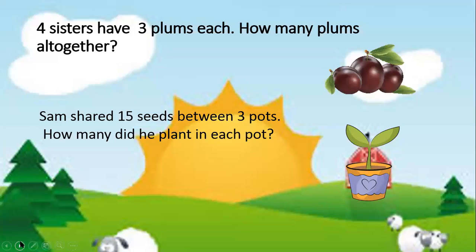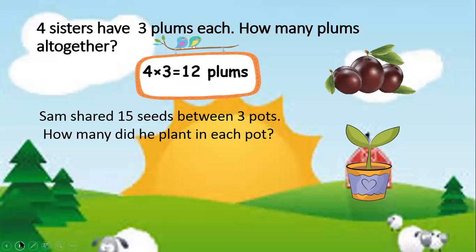4 sisters have 3 plums each. How many plums altogether? We have to do multiplication. That means 4 times 3 is 12 plums.